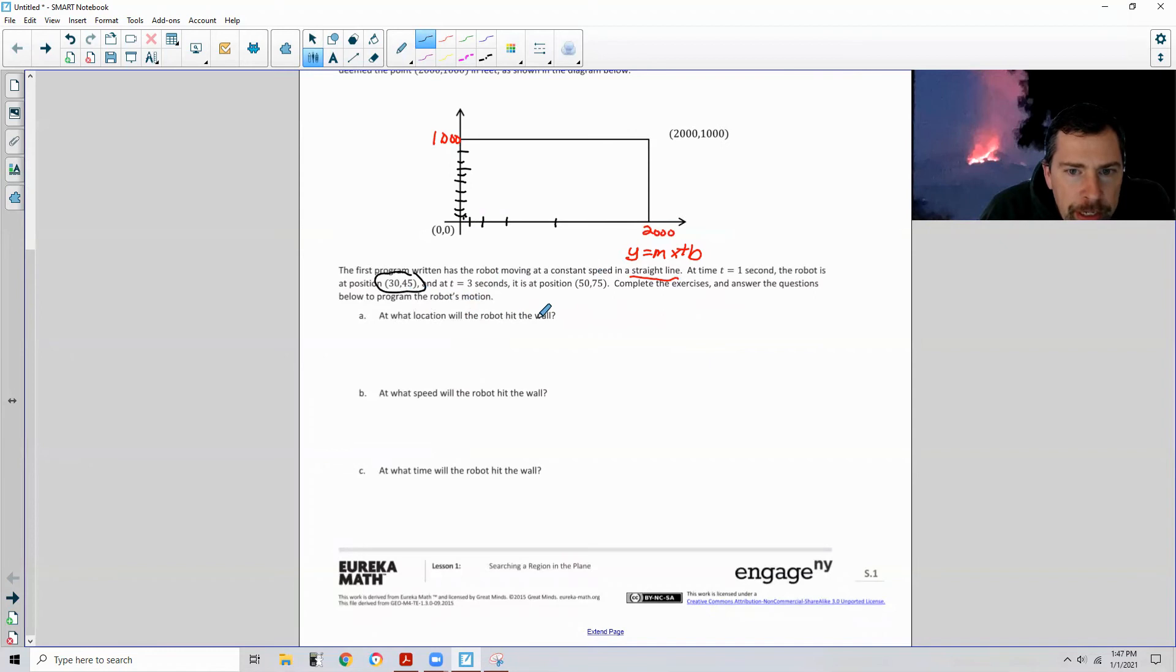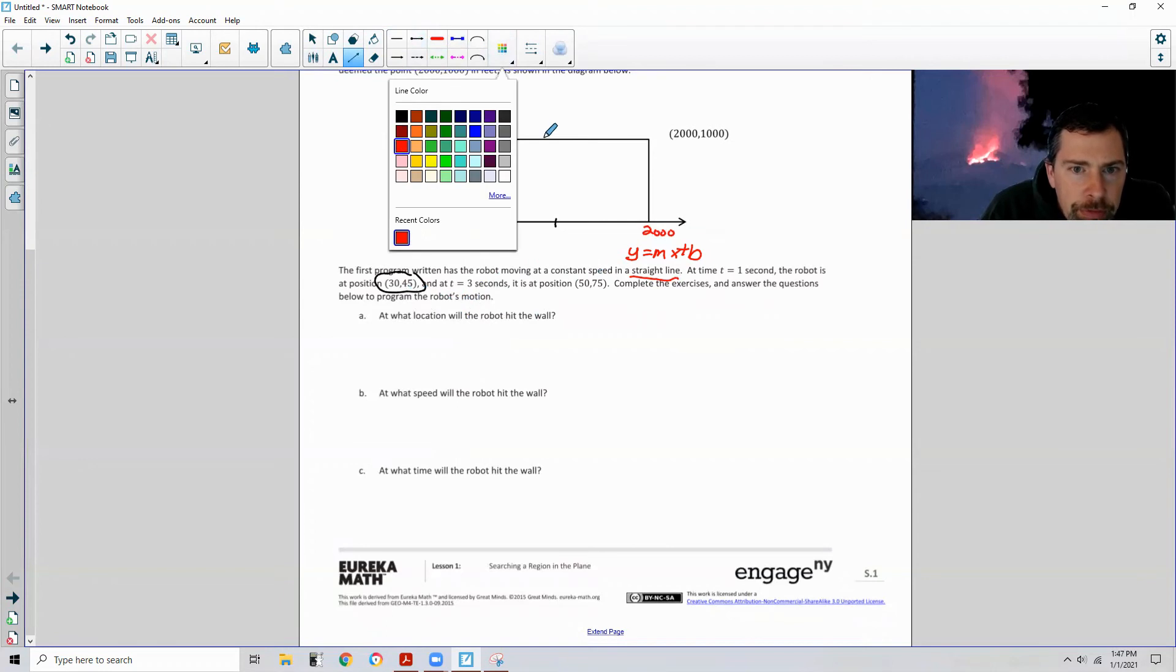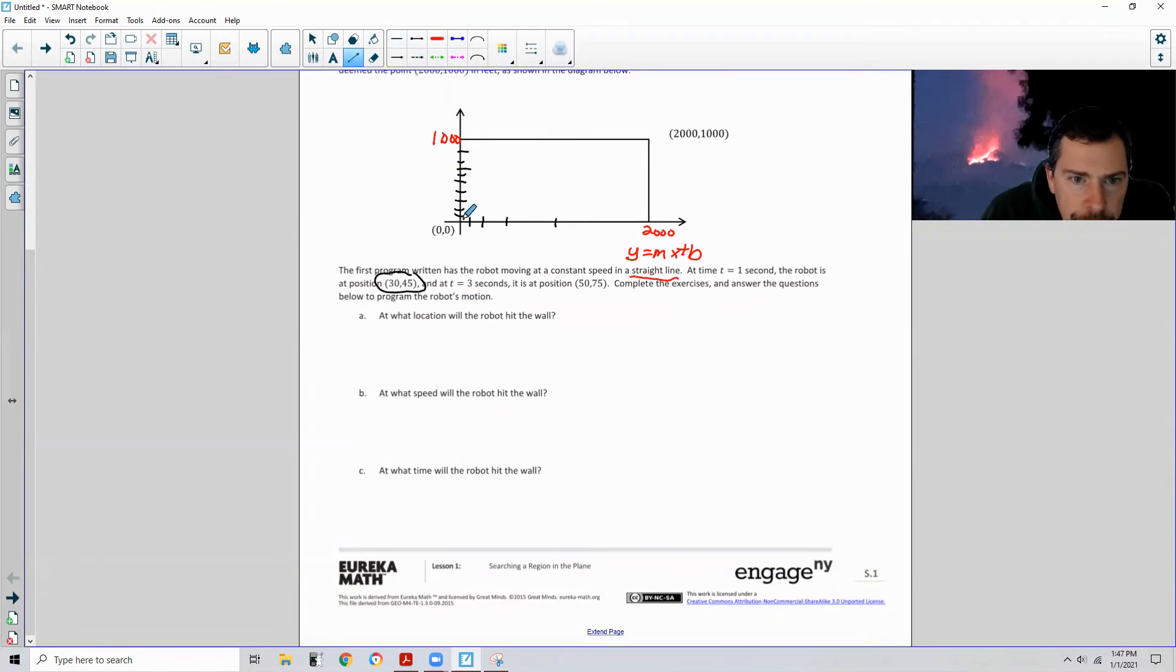At what location will the robot hit the wall? So if it's going in this direction, we have a linear equation. Remember all we need is two points to generate a line. So this question is asking if the robot started here and got to here in two seconds and it keeps going in that linear fashion, where is it going to hit the wall? It's going to be the point x, some x comma 1,000 for y.